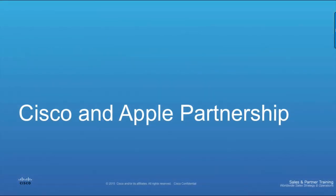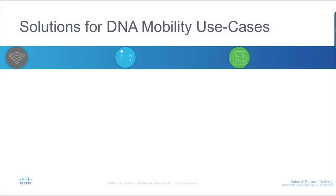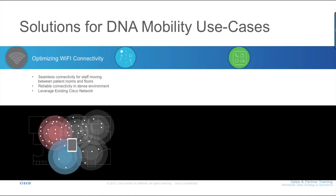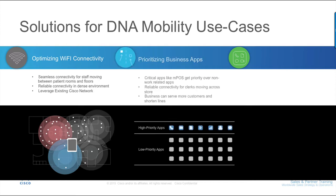The Cisco-Apple collaboration helps to automate and optimize the roaming behavior and quality of service for Apple devices in a Cisco network, with features like optimized Wi-Fi connectivity for seamless roaming by leveraging your existing Cisco network, prioritizing the right apps in the right environment with Fast Lane, and native integration of voice and collaboration using Cisco Spark for mobile users.